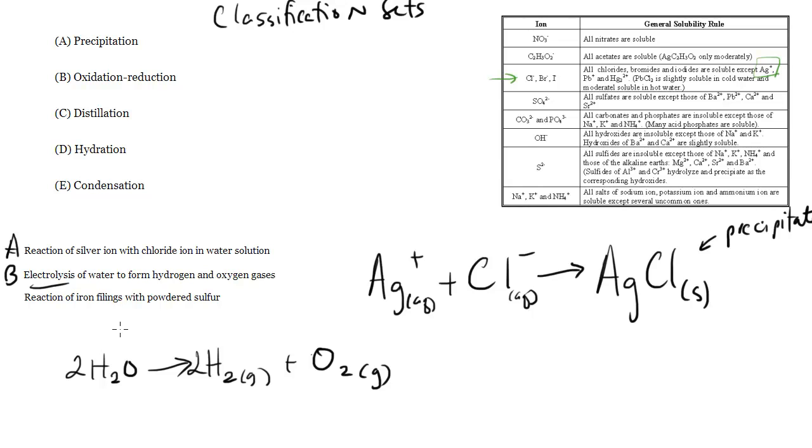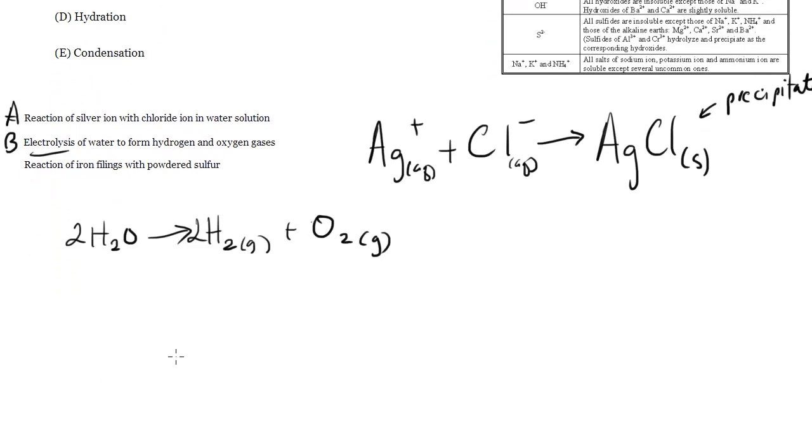Reaction of iron filings with powdered sulfur, so this one's a bit trickier. We have iron filings, that's solid metal, and we are adding it to powdered sulfur, which is solid, pure sulfur. So what's going to happen here? Well if you think about it,